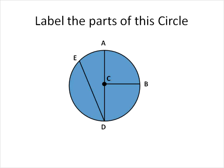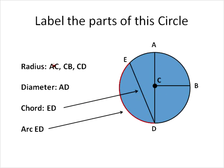When we're labeling the parts of the circle, a radius is the distance from the center to the circumference or any point along the outside of the circle. So CA or AC is one radius, CB and CD are all examples of radius.